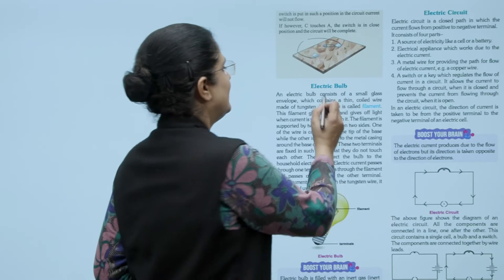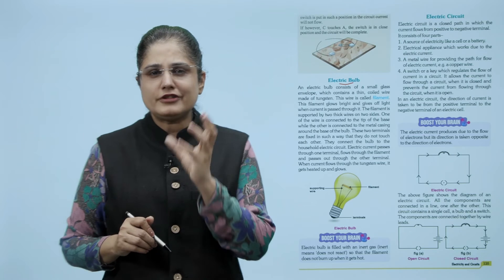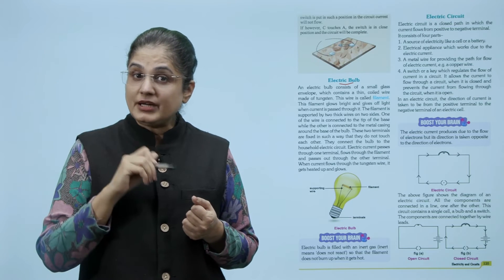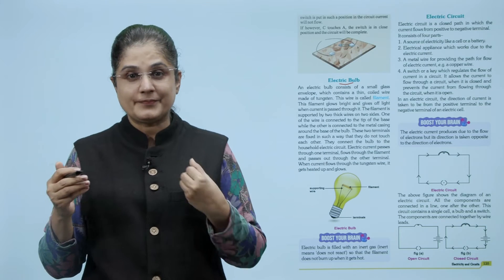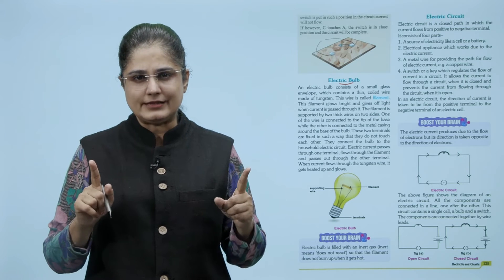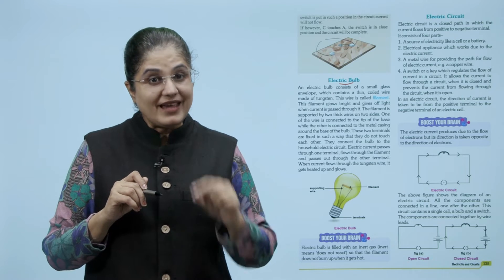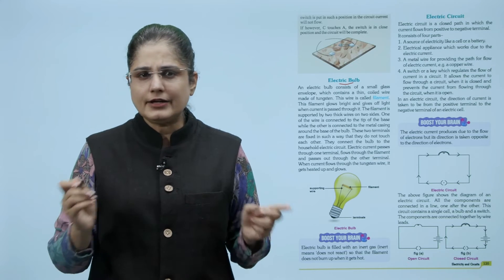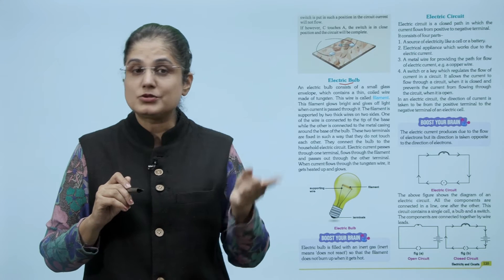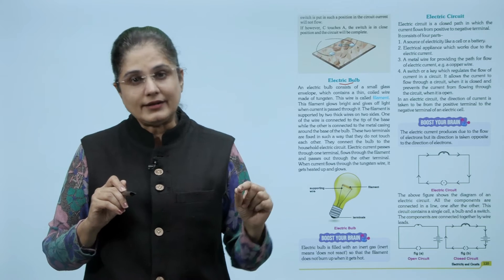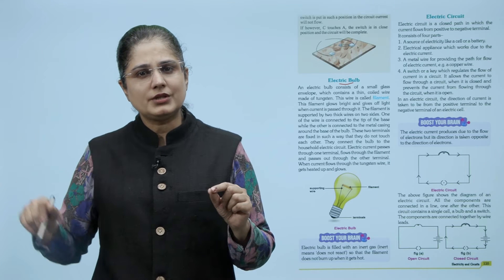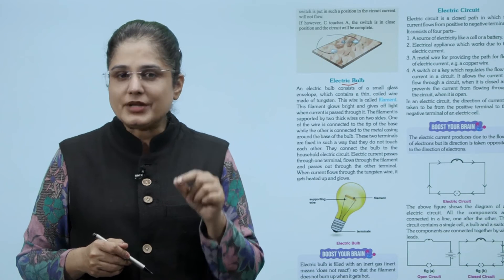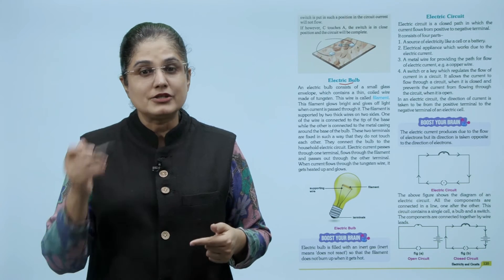Now let us look at electric bulb. An electric bulb consists of a small glass envelope which contains a thin coiled wire made of tungsten. This wire is called filament. The filament glows bright and gives off light when current is passed through it. Now the filament is supported by two thick wires on two sides. One of the wire is connected to the tip of the base while the other is connected to the metal casing around the base of the bulb. These two terminals are fixed in such a way that they do not touch each other. They connect the bulb to the household electric circuit. Electric current passes through one terminal, flows through the filament and passes out through the other terminal. When current flows through the tungsten wire it gets heated up and glows. Now electric bulb is filled with an inert gas, inert means which does not react, so that the filament does not burn up when it gets hot.